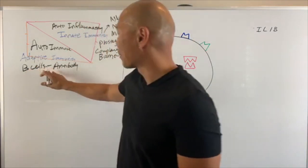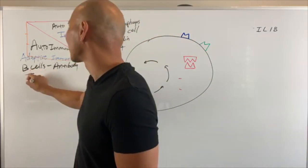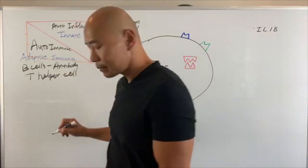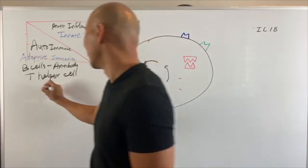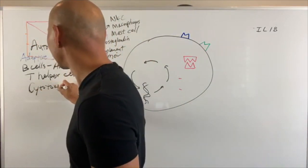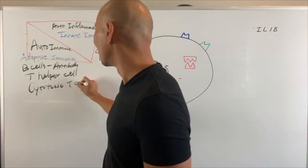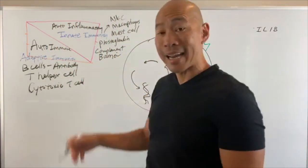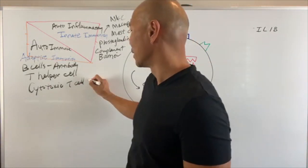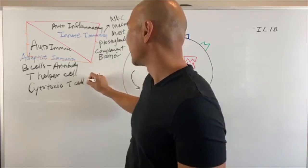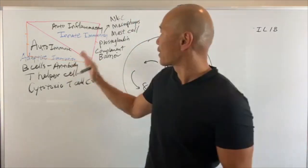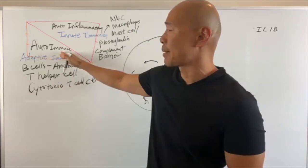Other types of adaptive immunity cells are T cells. You have T helper cells and cytotoxic T cells. These T cells have been stimulated by the antibody to recognize a specific virus or bacteria — they've gone to school, so to speak. Cytotoxic T cells not only recognize the pathogen but will actually go kill it. So you have different types of immune cells responsible for different types of disease.